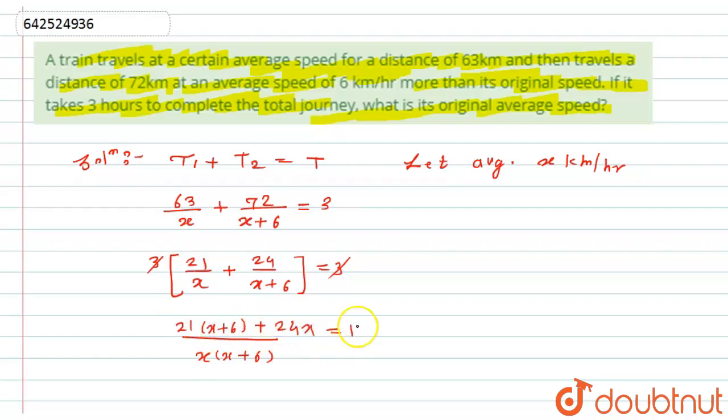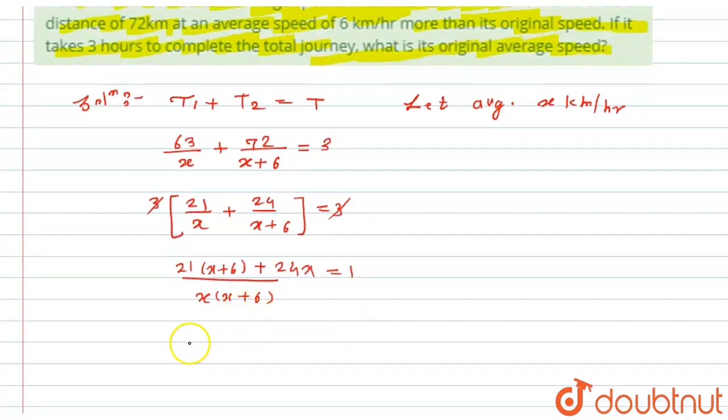This is equals to 1. Now after this I will take the denominator to that side and ultimately multiply this 1 by 2. So it will become 21x plus 126 plus 24x.